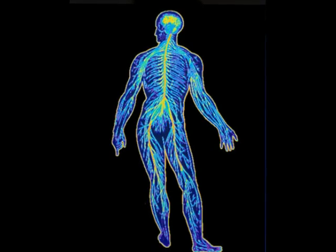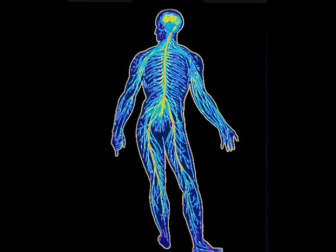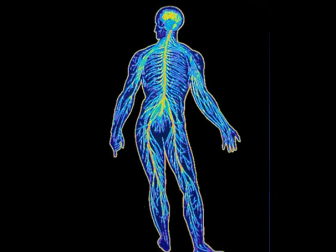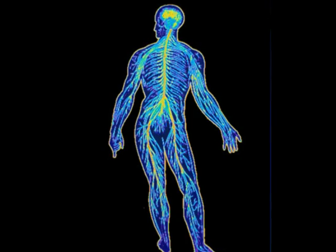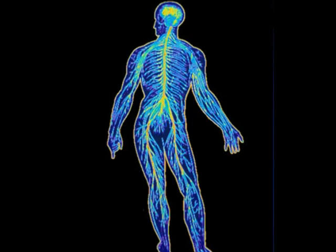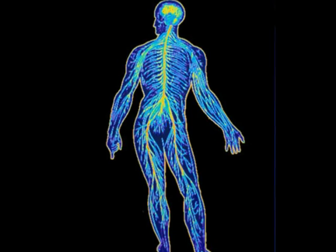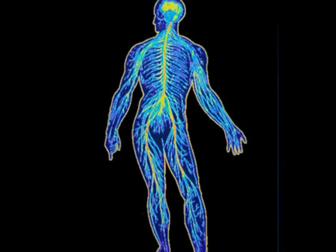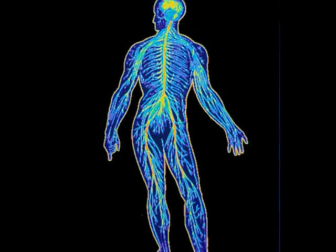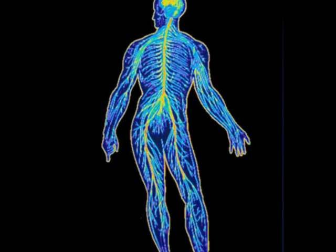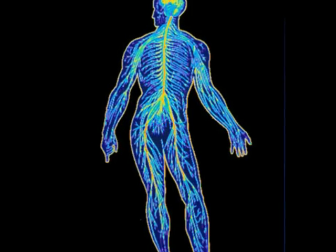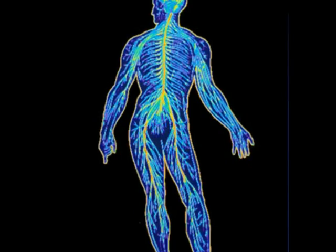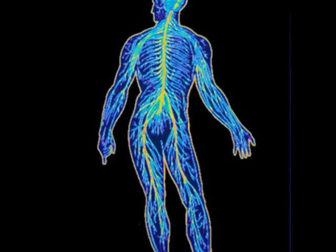Hi, this is Kyla and this is Emily and this is our project on the nervous system. There are three main parts of the nervous system: the brain, the spinal cord and the peripheral nerves. And that is what we're going to be talking about today.